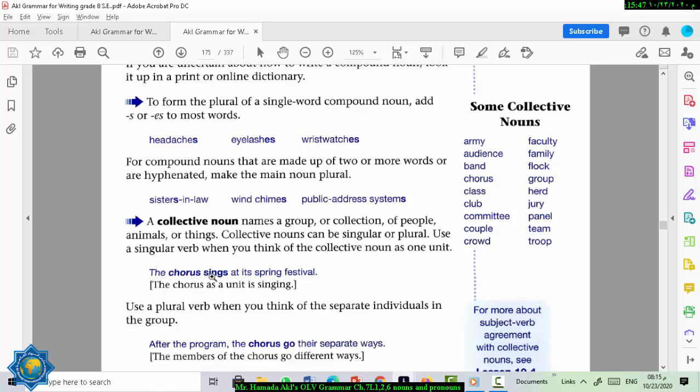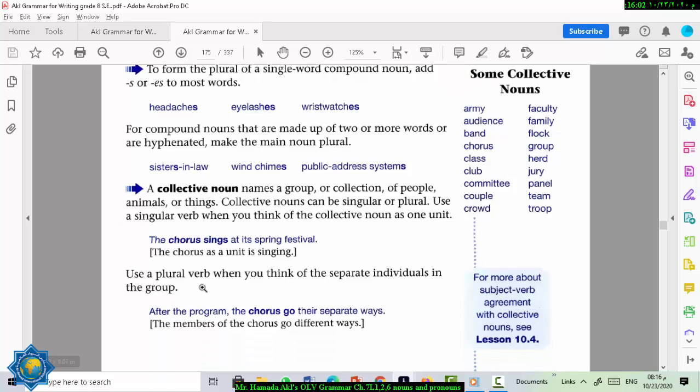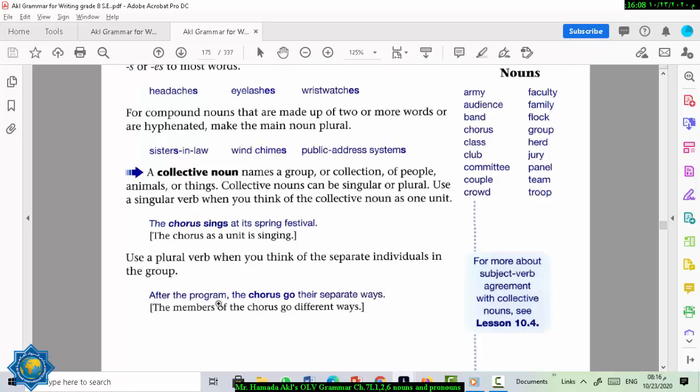But if I say the chorus sing, I have to use a hint in the sentence that they are not acting as one. For example, I can say the chorus sing at their, their, not its spring festival. Use a plural verb when you think of the separate individuals in the group. For example, here, after the program, the chorus go, we didn't say goes. Go is a plural verb. That means the collective noun here is plural. And the hint to that is the word there because it refers to more than one. So their separate ways means everyone had his own way. The members of the chorus go different ways.